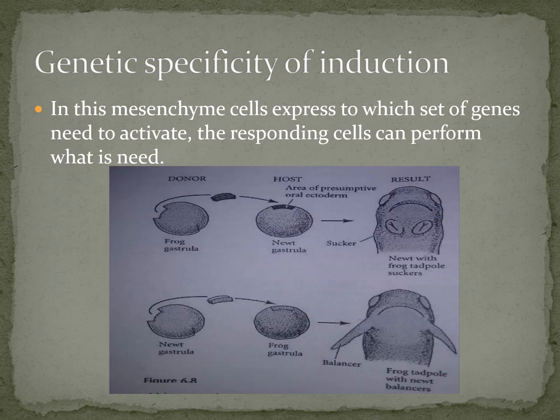The last topic is genetic specificity of induction. In this case, a specific set of genes is needed to activate the responding cell to perform its function. The mesenchymal cells express a set of genes needed to activate what the responding cell can perform. For example, donor pro-gastrula cells implanted into a newt gastrula result in the formation of a newt with pro-gastrula characteristics. So genetic specificity does not require a specific region — it only requires a specific set of genes.